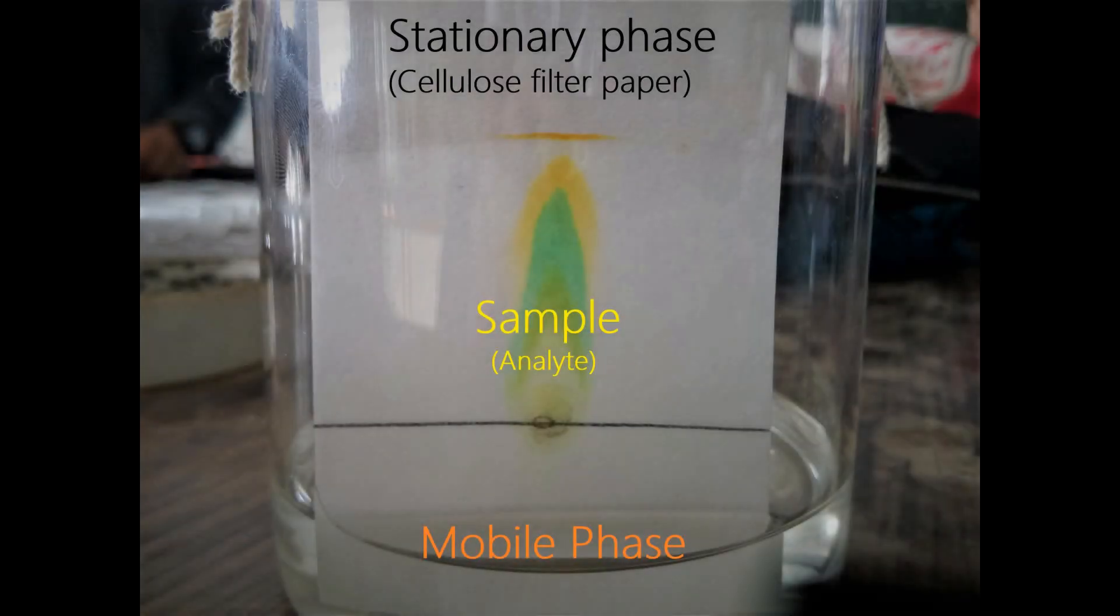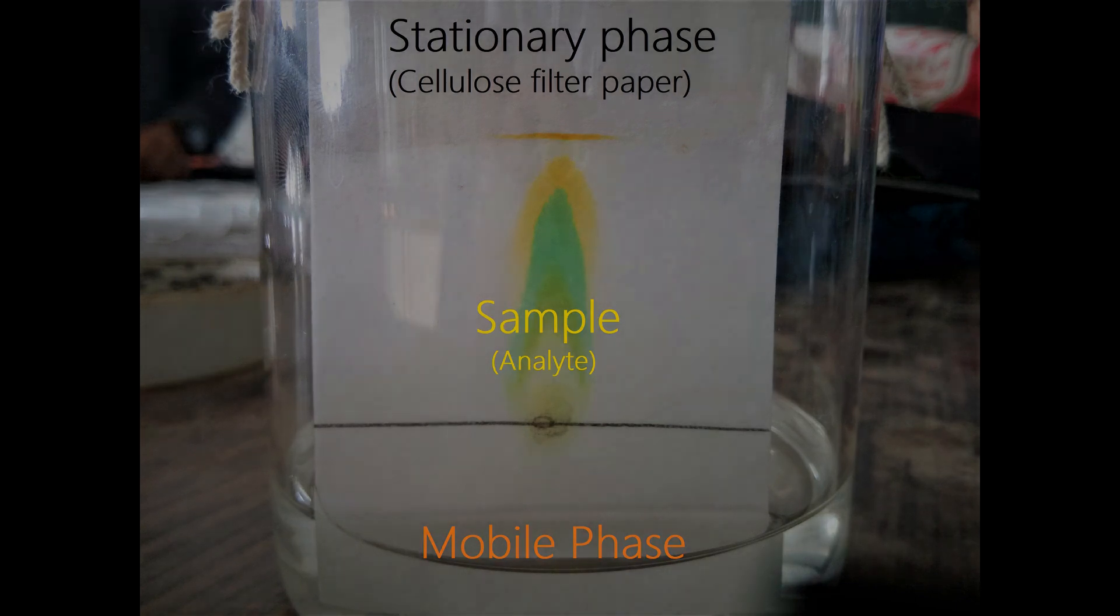In paper chromatography, the stationary phase consists of a layer of cellulose highly saturated with water. Water droplets settled in the pores of the paper make up the stationary liquid phase. The mobile phase is usually a polar or a non-polar solvent or a mixture of both and travels at the stationary phase carrying the samples or analyte along with it.